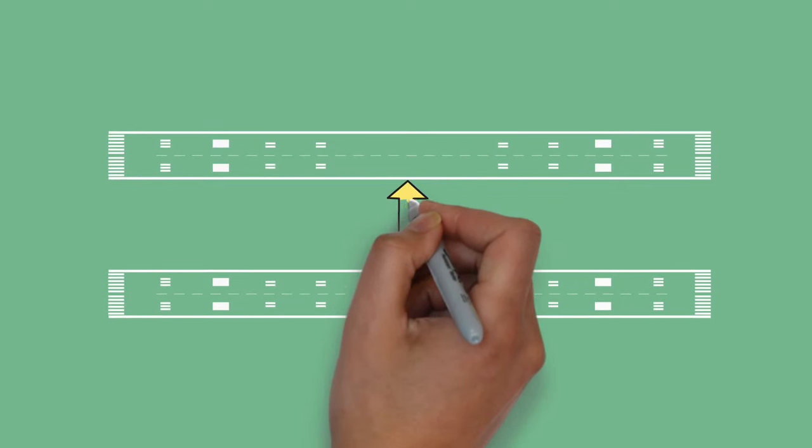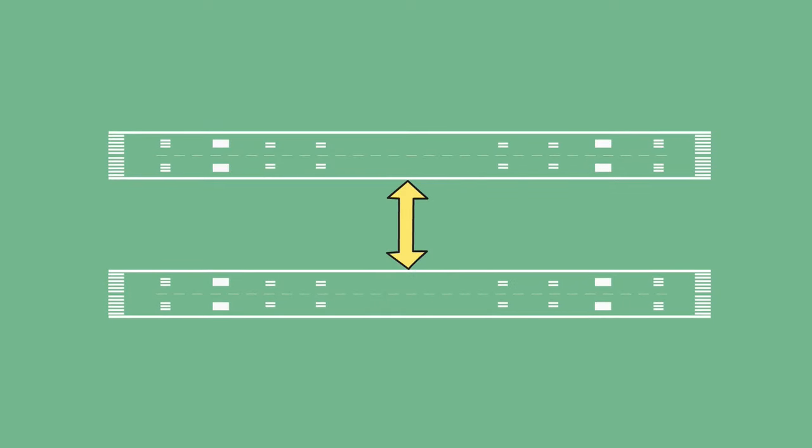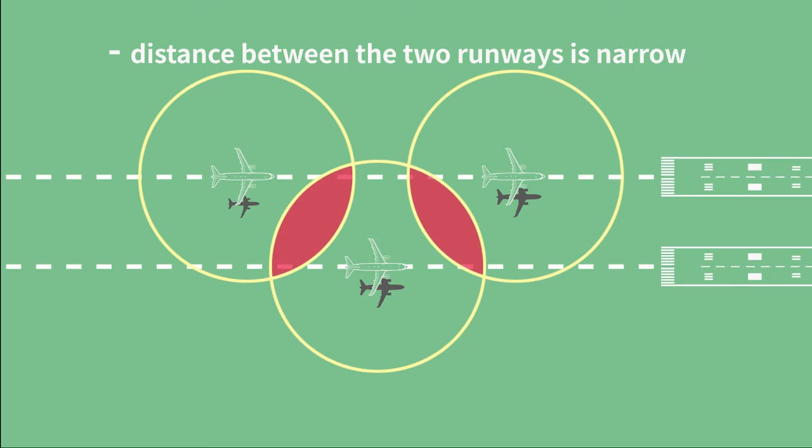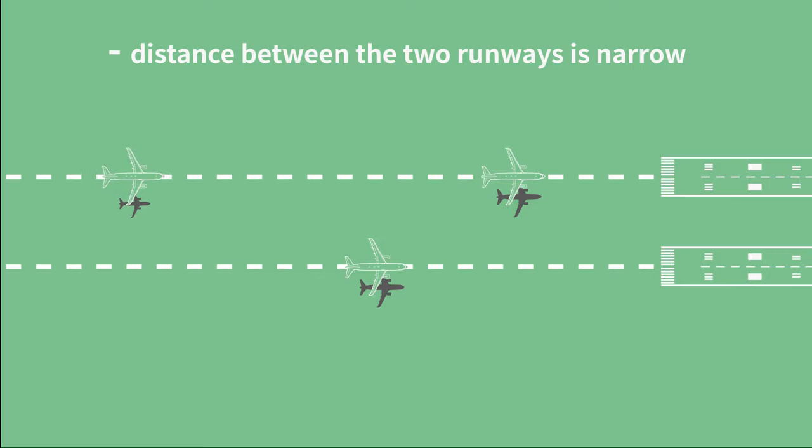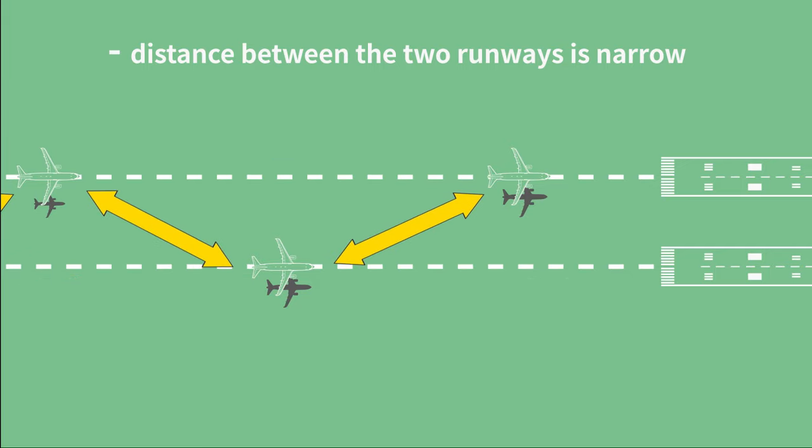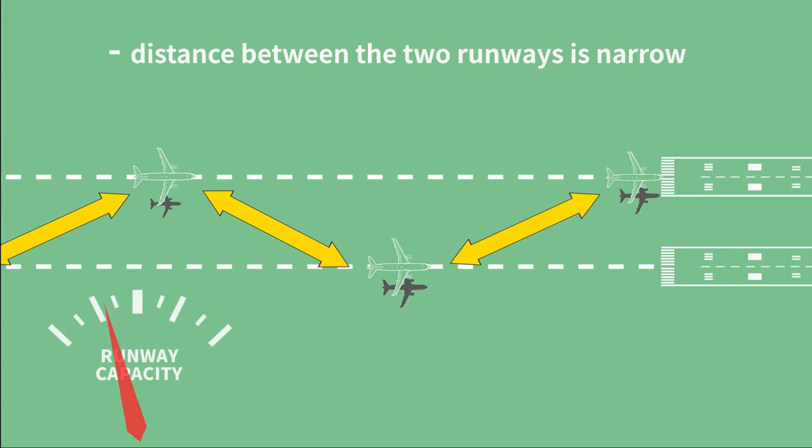In parallel runways, the distance between two runways is an important factor in determining capacity. Even if two runways are used, if the distance between the two runways is narrow, regulated intervals and time for separation of aircraft must be maintained for safety reasons. In other words, there is a limit to the increase in capacity.